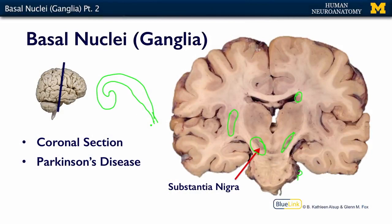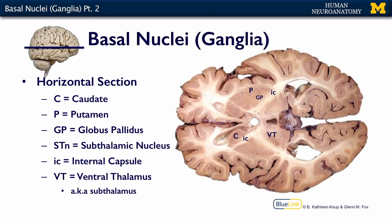The next section is a horizontal section where you can see all the parts again. The front is the frontal lobe and the caudal pole is the occipital lobe. The caudate tells you exactly where you are in the brain — it's always in the anterior part and always medial to the internal capsule. We'll talk more about the internal capsule when we discuss the cortex, but it's where a lot of motor information passes out of the brain to the brainstem and spinal cord.